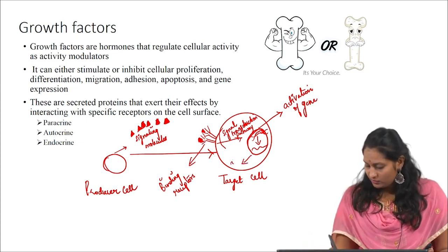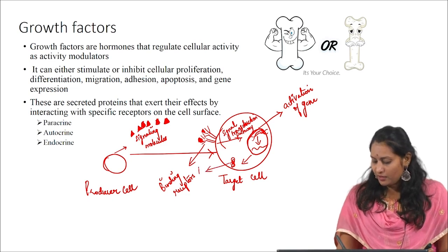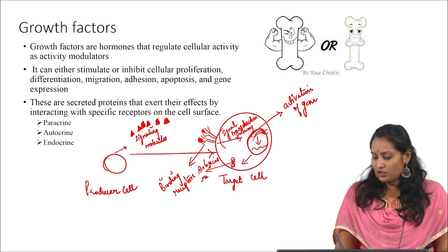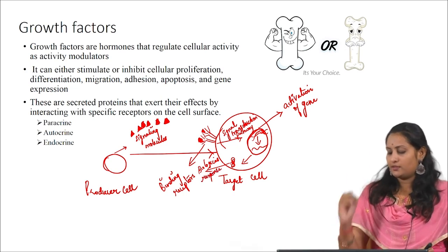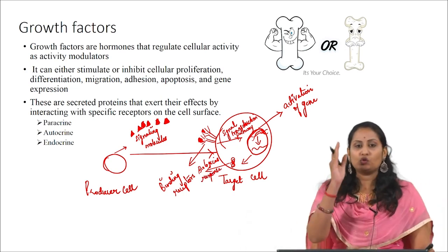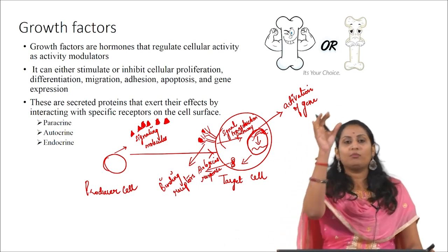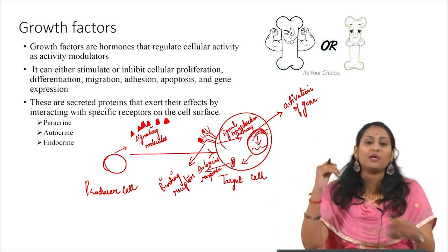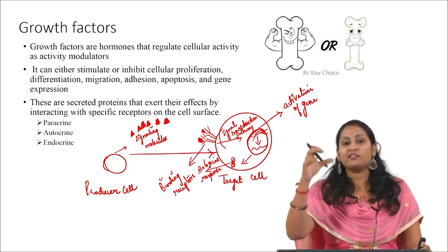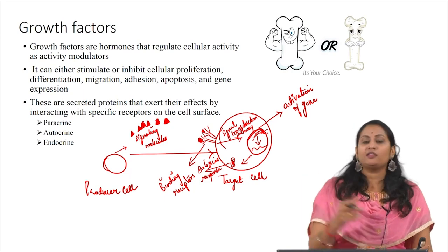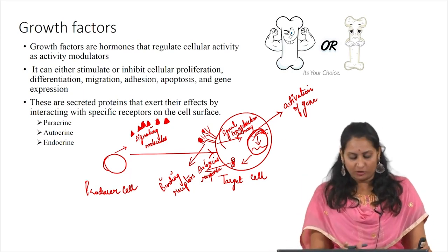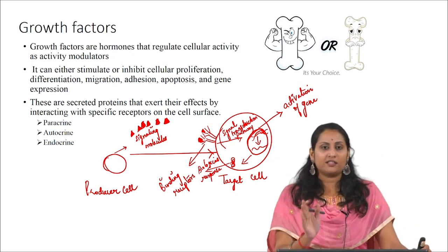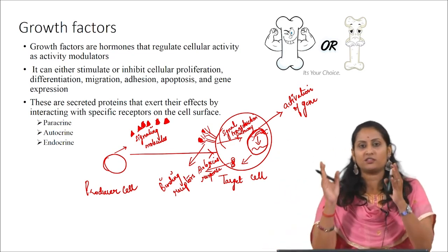This enhances the biological response — this is how growth factors act. Signaling molecules go and bind to the receptor present on the target cell, then they regulate the signal transduction pathway and gene transcription, then they elicit the biological response. This is how the producer cell changes the response of the target cell with the help of growth factors.